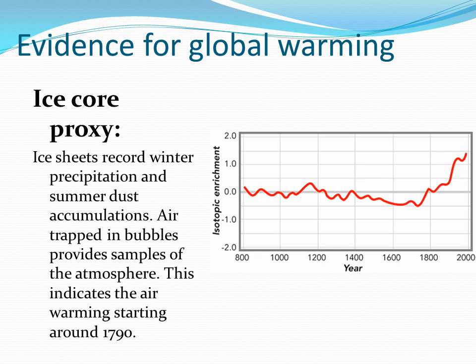More proxy data sets. The ice core data set gives a fairly straightforward record of atmospheric gas compositions, some of which are able to correlate with air temperature.